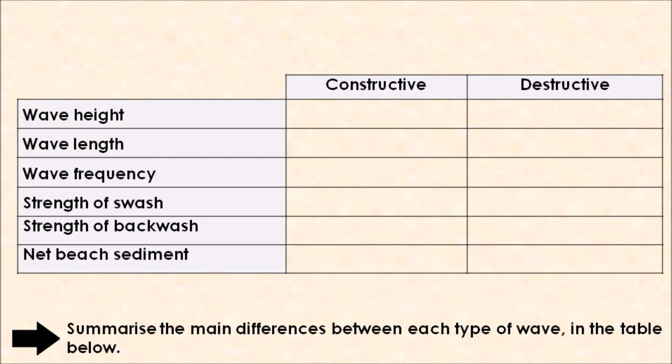If we were to quickly summarize the difference between each type of wave, we've got constructive waves and destructive waves. If we're thinking about wave height, our constructive wave has a low wave height, typically under one meter, whereas your destructive wave has a tall wave height, typically over one meter.